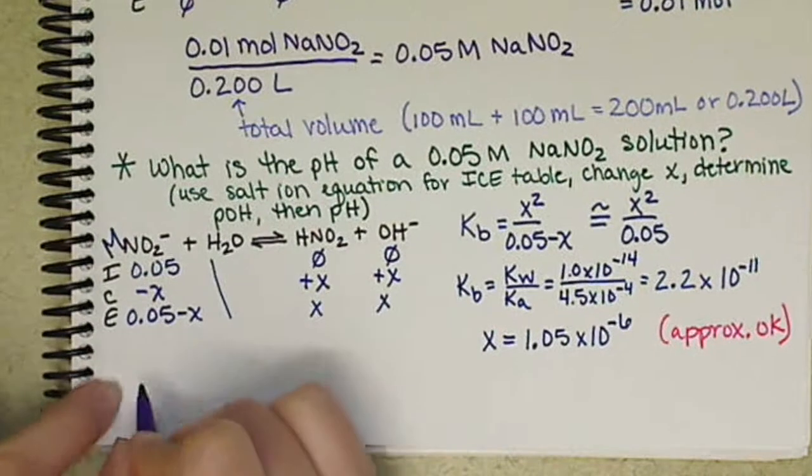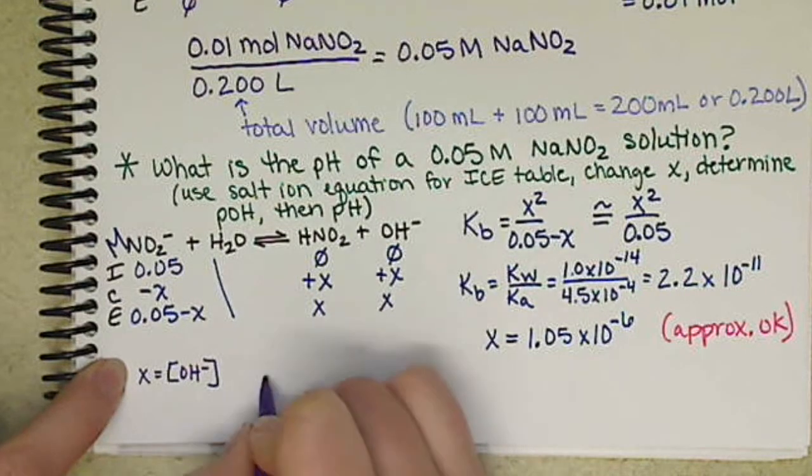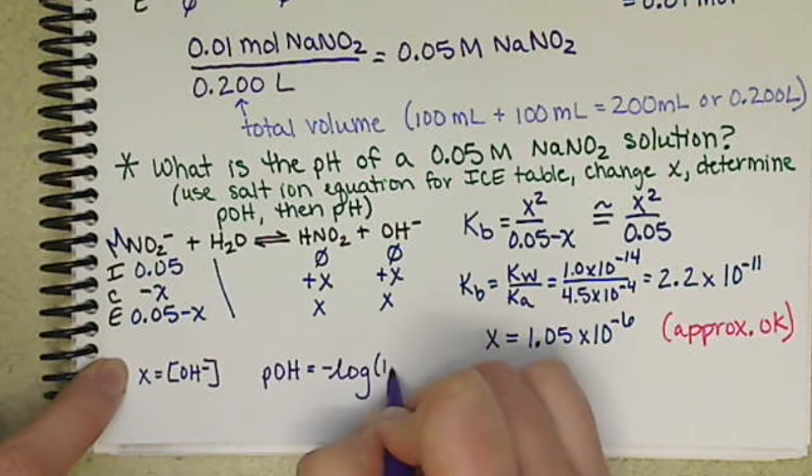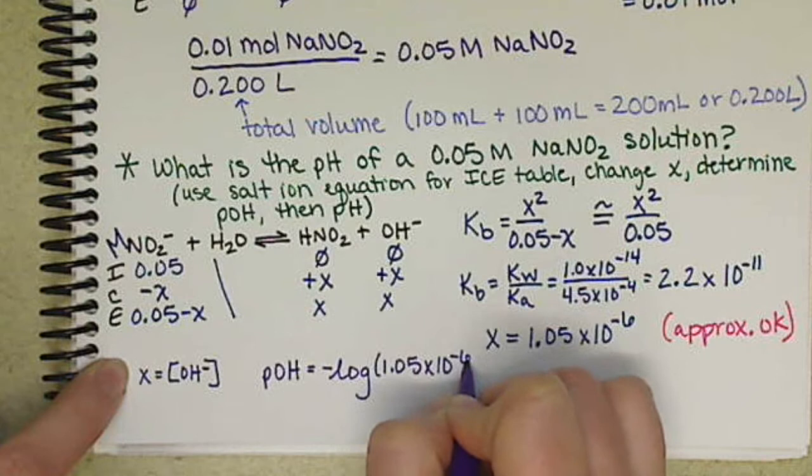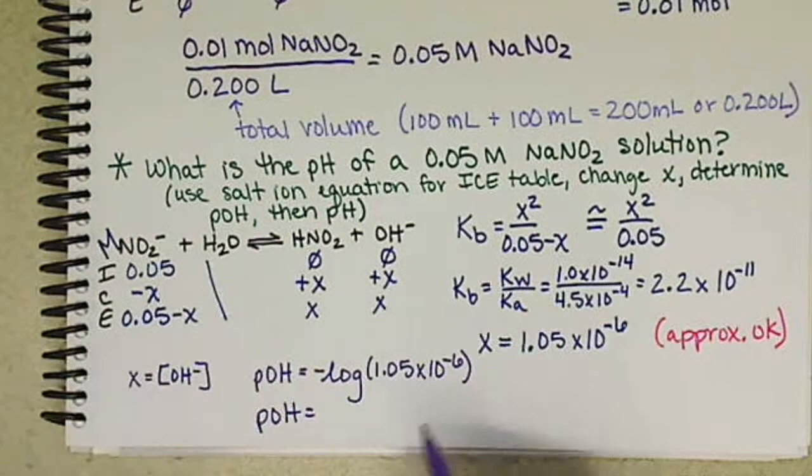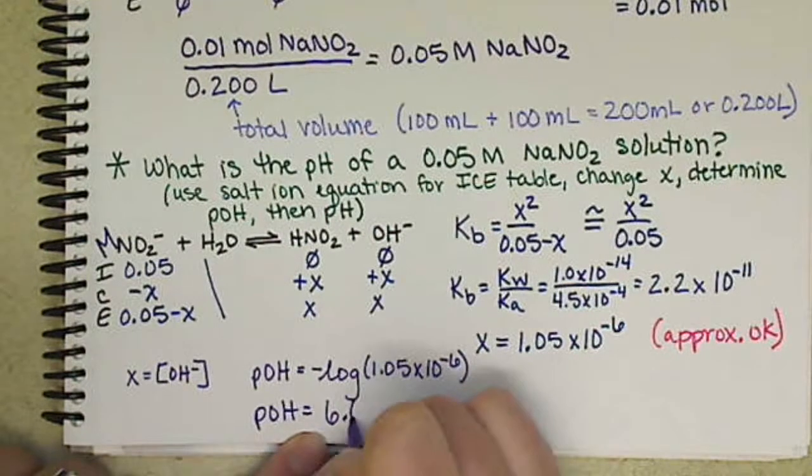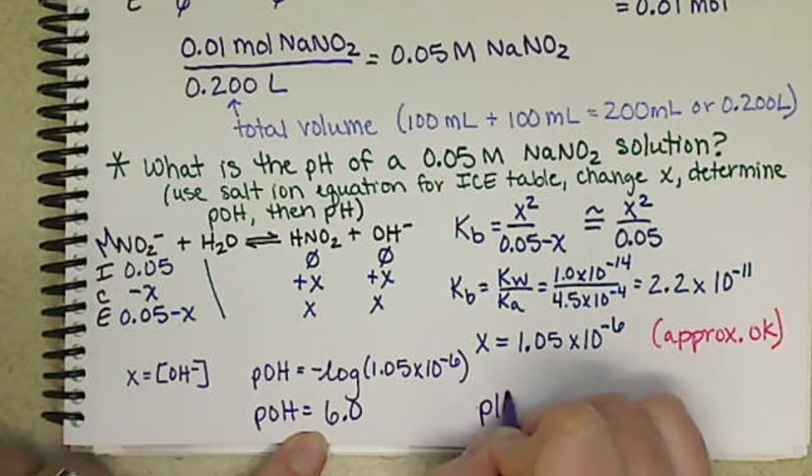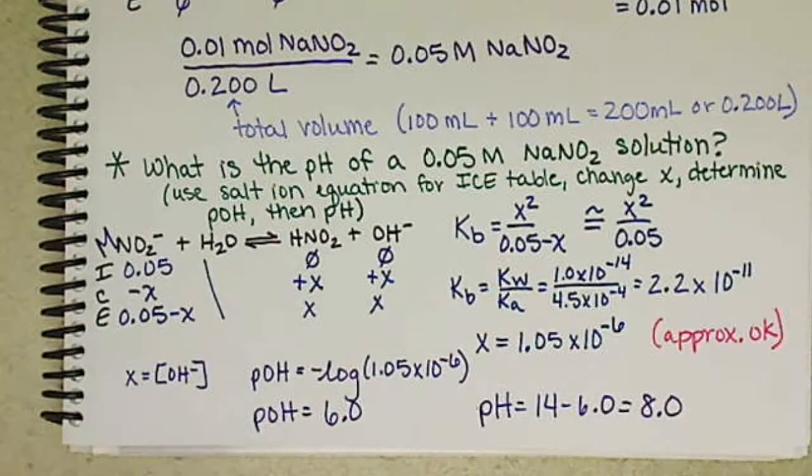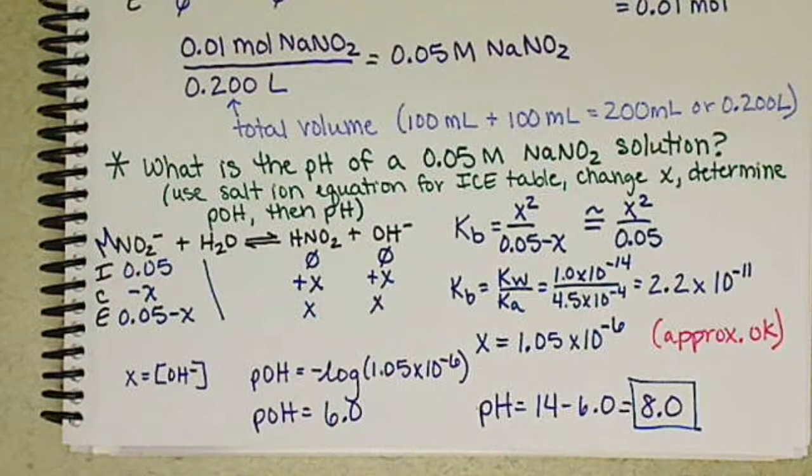So our x value is our concentration of hydroxide ion. So pOH is equal to the negative log of 1.05 times 10 to the negative 6. So our pOH looks like we essentially have 6.0. So the pH is 14 minus 6.0. So the pH at our equivalence point is 8.0.